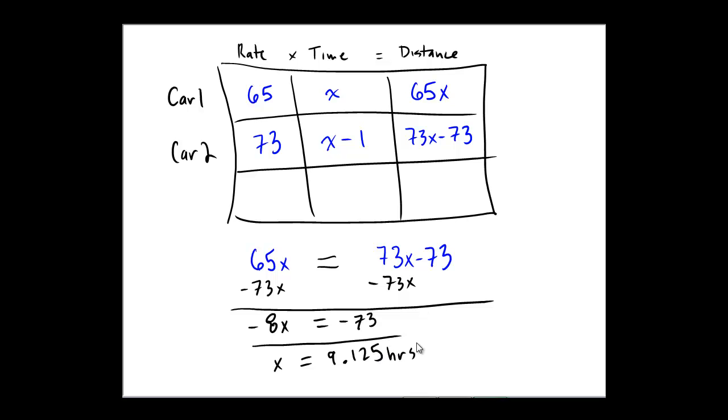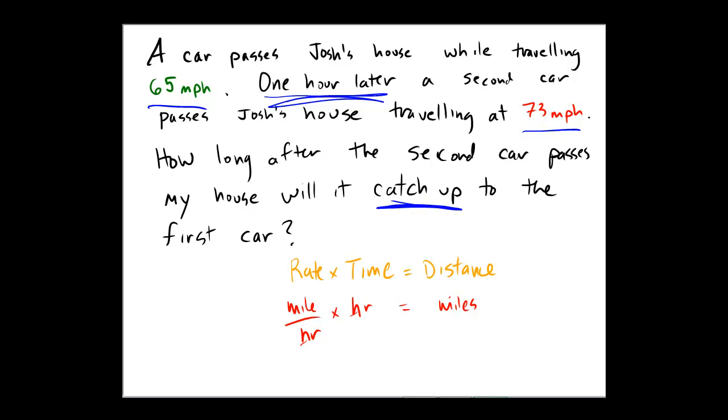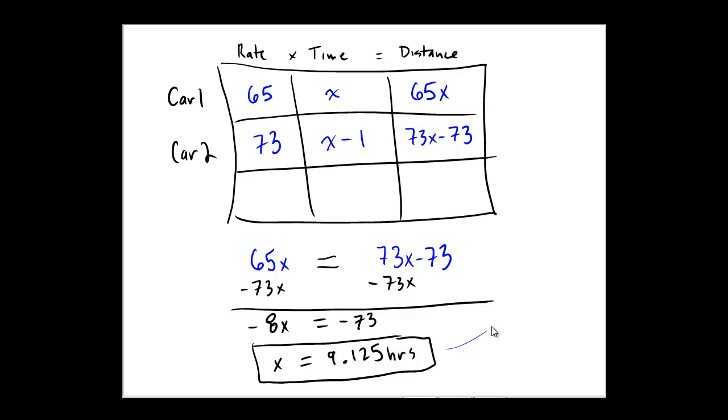So the answer is 9.125 hours for the value of x. Now, let's remind ourselves, what are we looking for? How long after the second car passes? We want to know how long the second car was driving for, not the first car. If we look back at our chart, notice that this x we solved for is the amount of time that the first car was traveling. Since the problem wants the amount of time the second car has been traveling, we take that x minus 1 expression. We know that x is 9.125, then subtract 1 from that. So the answer would be 8.125 hours.